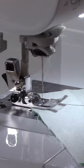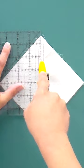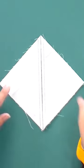Sew a scant quarter inch seam down both sides of the drawn line. Cut apart on the drawn lines to reveal half square triangles.